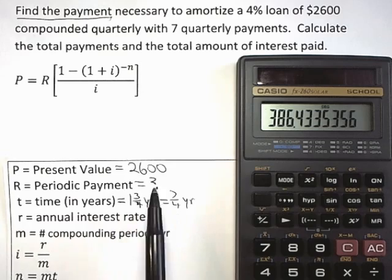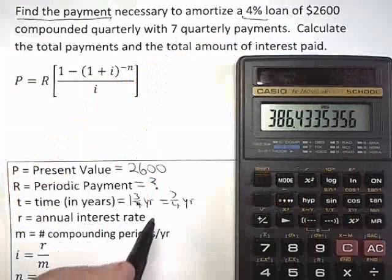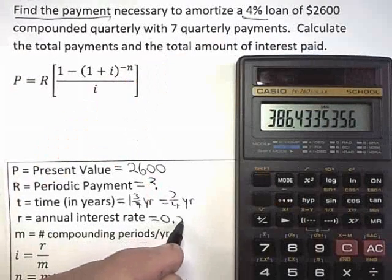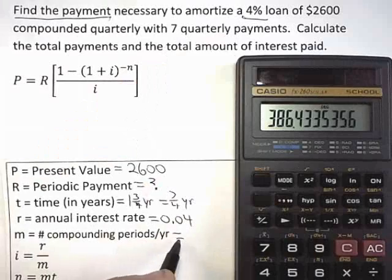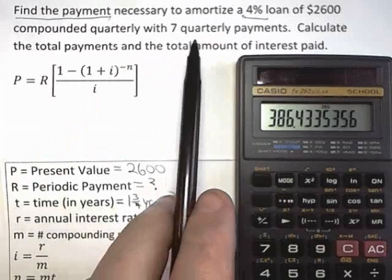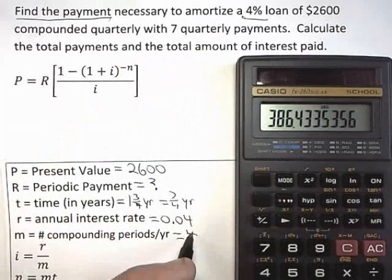The annual interest rate, little r, is a four percent loan. So if you write that as a decimal, 0.04. M is a number of compounding periods per year. You're doing it quarterly, so that would be four times a year.